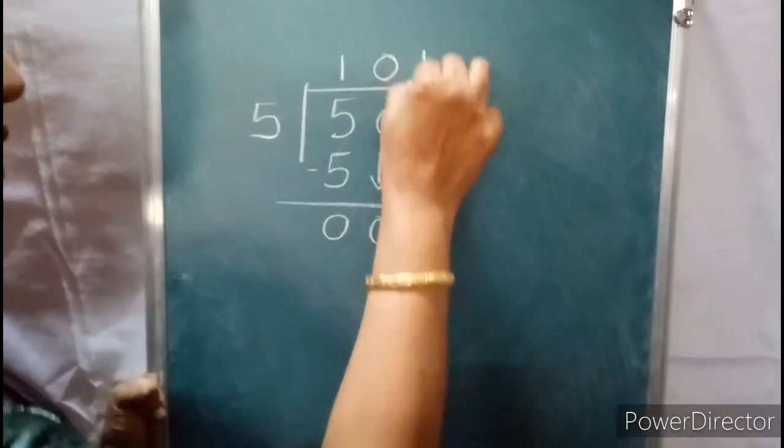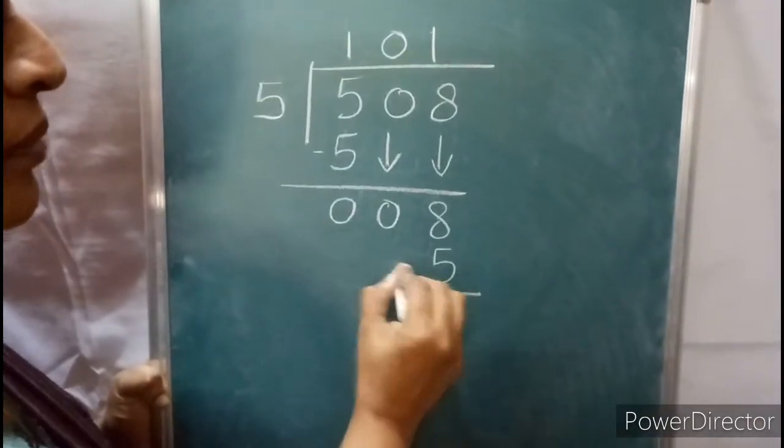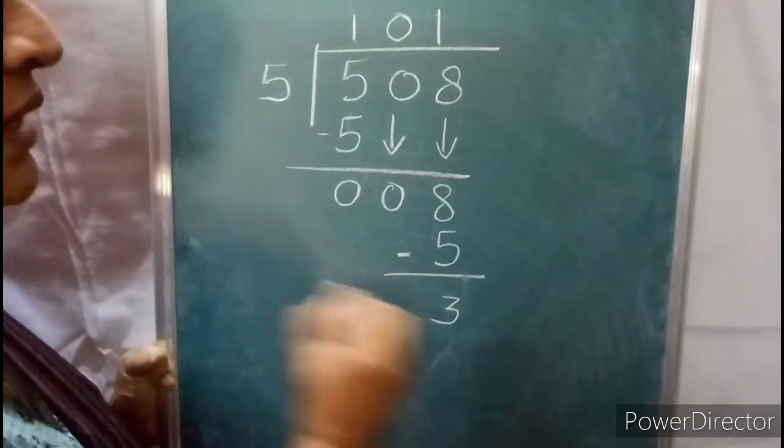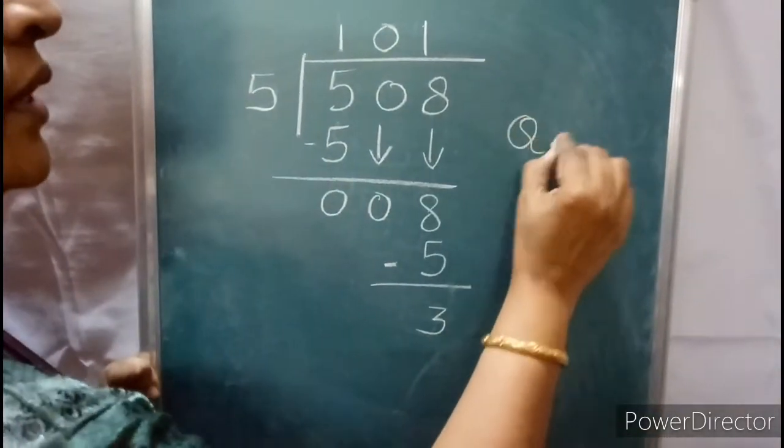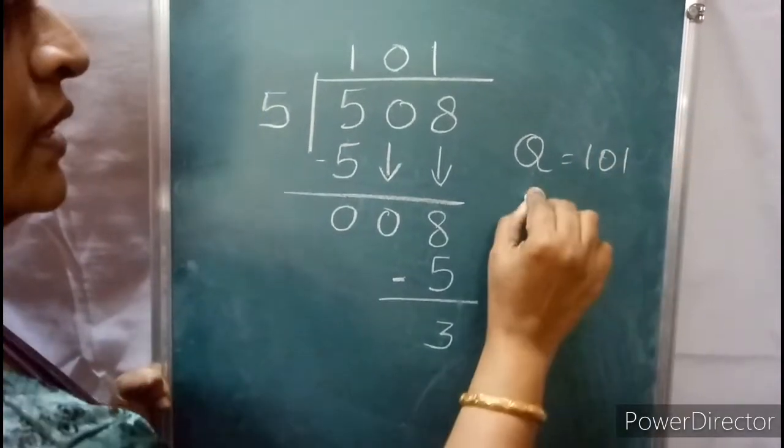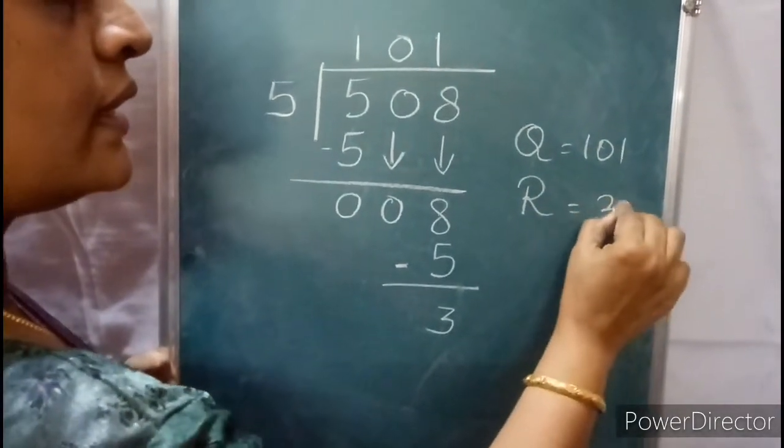8. 5 ones are 5. 8 minus 5 equals 3. So what is the quotient? Quotient equals 101, remainder equals 3.